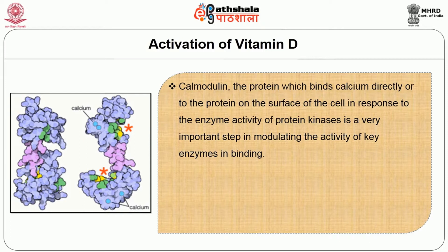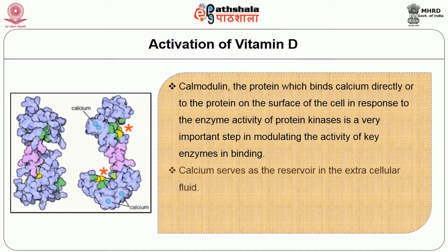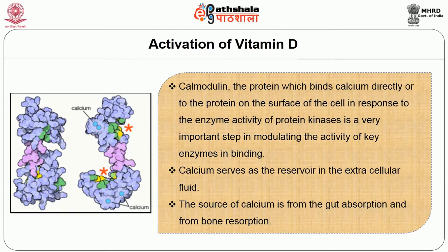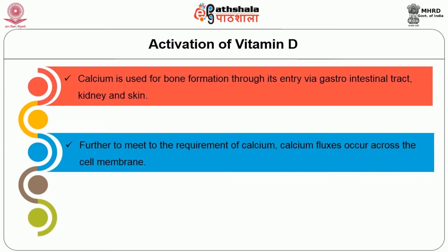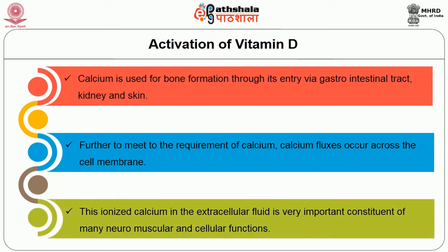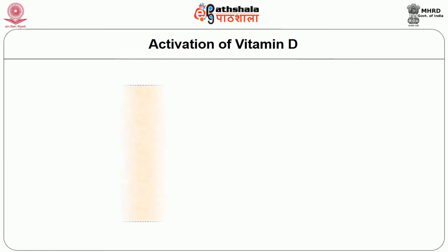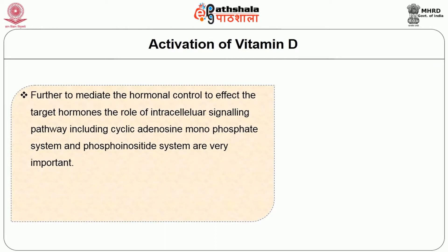Calmodulin, the protein which binds calcium directly or to protein on the surface of the cell in response to enzyme activity of protein kinases, is a very important step in modulating the activity of key enzymes. Calcium serves as a reservoir in the extracellular fluid. Sources of calcium are from gut absorption and from bone resorption. Calcium is used for bone formation through entry via the gastrointestinal tract, kidney, and skin. To meet the requirement of calcium, calcium fluxes occur across the cell membrane. This ionized calcium in the extracellular fluid is a very important constituent of many neuromuscular and cellular functions. The intracellular signaling pathways, including the cyclic adenosine monophosphate (cAMP) system and the phosphoinositide system, are very important in mediating hormonal control. The feedback mechanism of the parathyroid gland through calcium receptors controls the ionized calcium in the extracellular fluid.